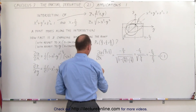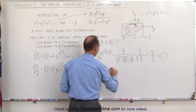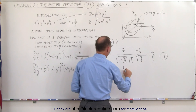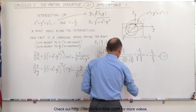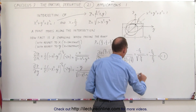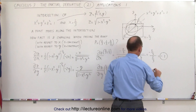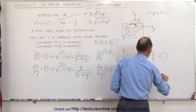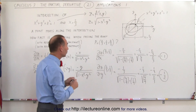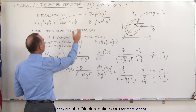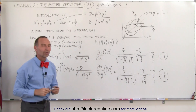Taking the partial of z with respect to y and plugging in x equals two-thirds and y equals one-third, we get minus one-third divided by the square root of four-ninths, which equals minus one-third divided by two-thirds, which equals minus one-half. So the rate of change of z with respect to x, when y is constant, is negative one; and the rate of change of z with respect to y, when x is constant, is negative one-half. That's how it's done.